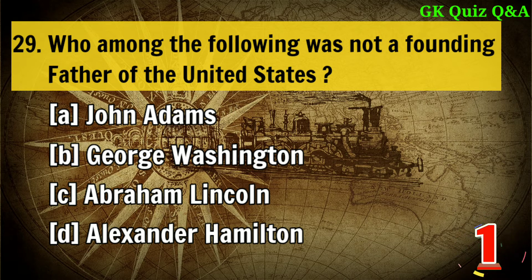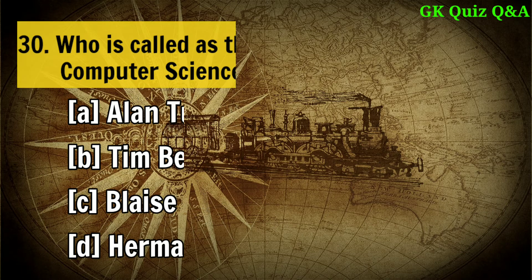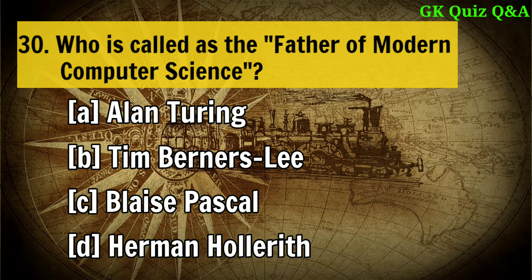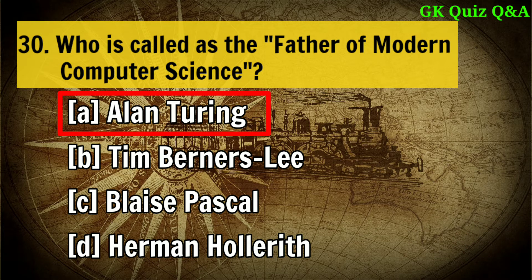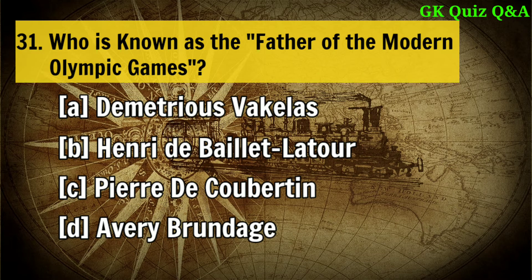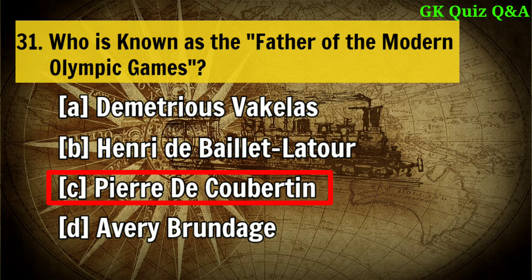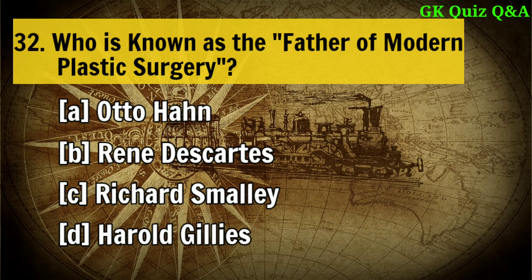Who among the following was not a founding father of the United States? Answer C: Abraham Lincoln. Who is known as the father of modern computer science? Answer A: Alan Turing. Who is known as the father of the modern Olympic Games? Answer C: Pierre de Coubertin.